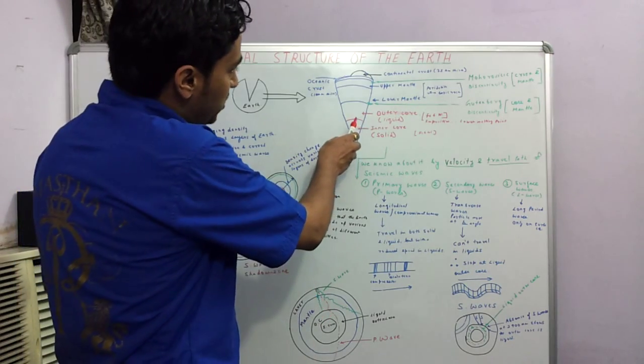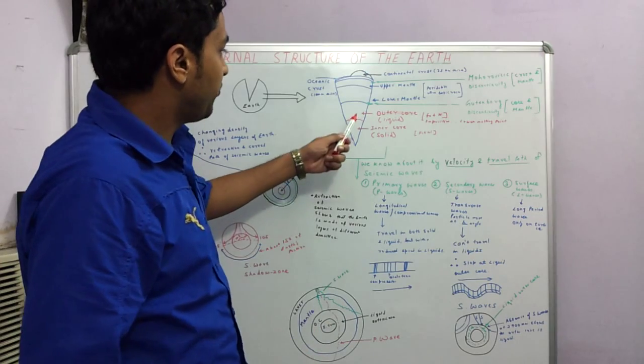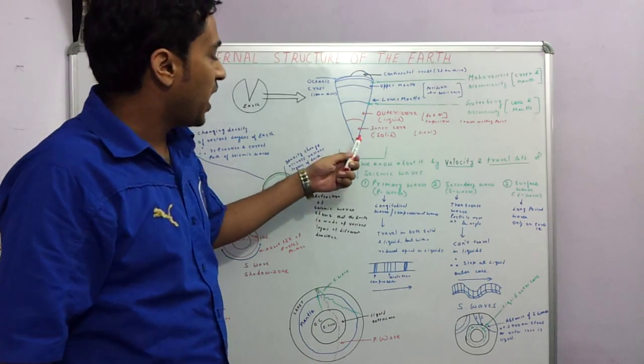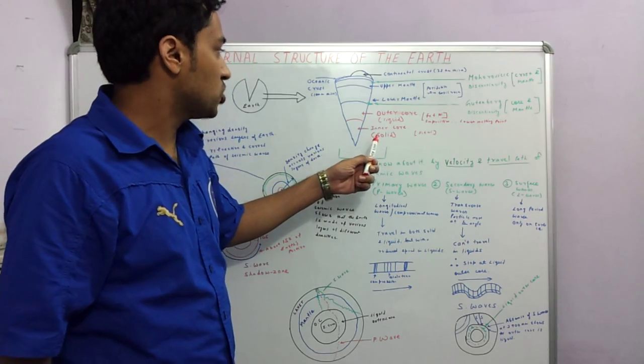Below the mantle is the core. The core is further divisible into the outer core, which is in a liquid form, and the inner core, which is solid.